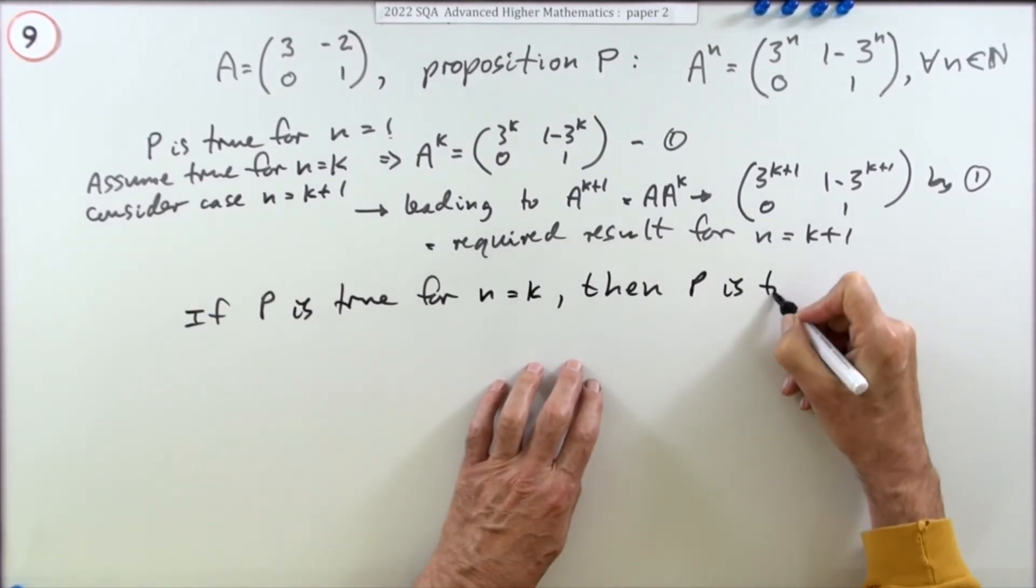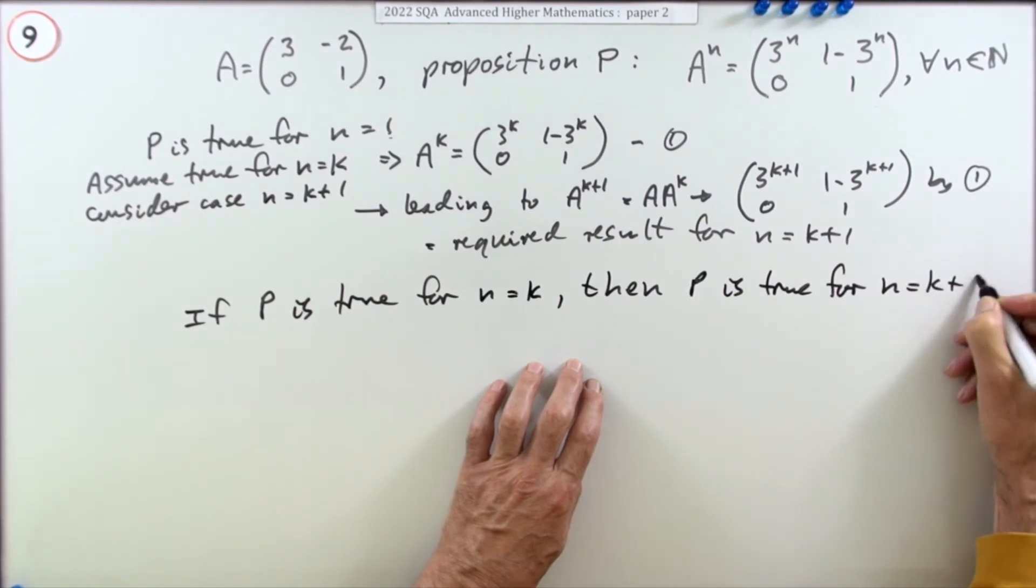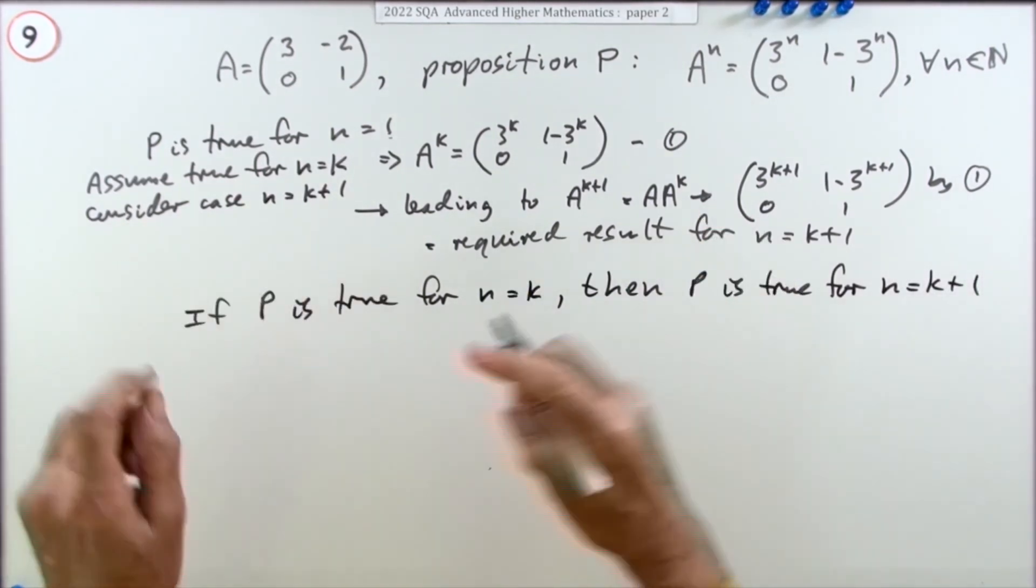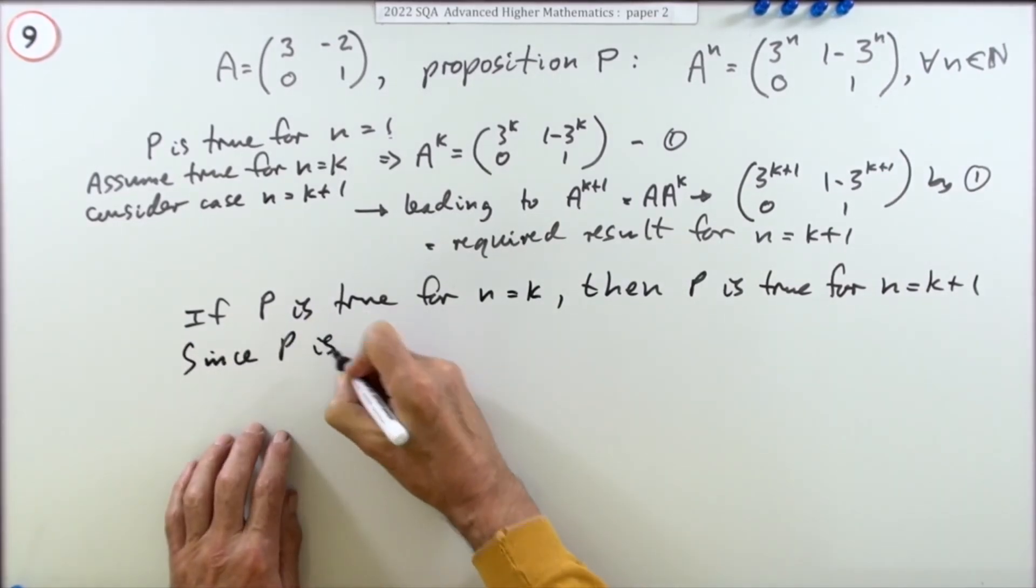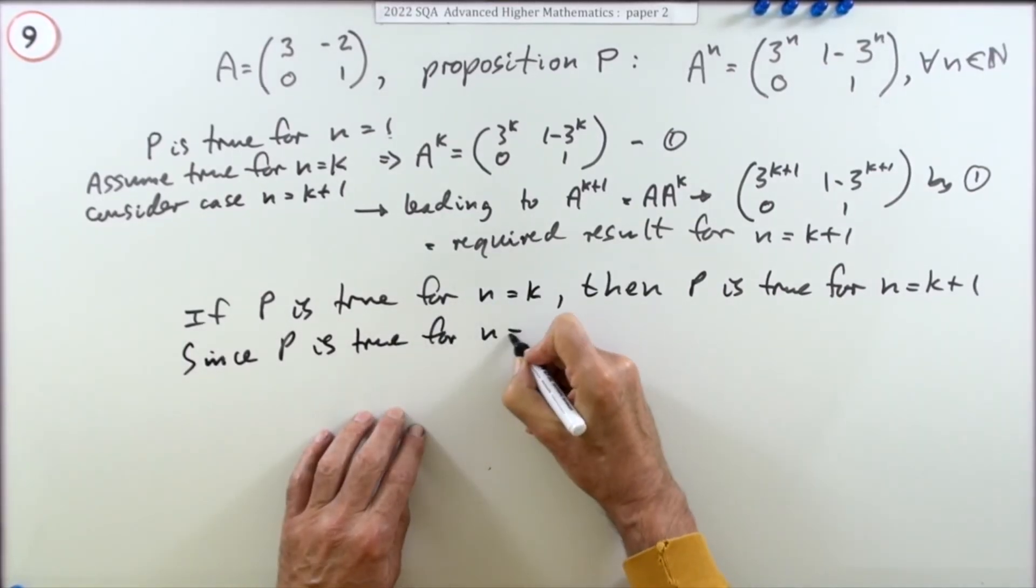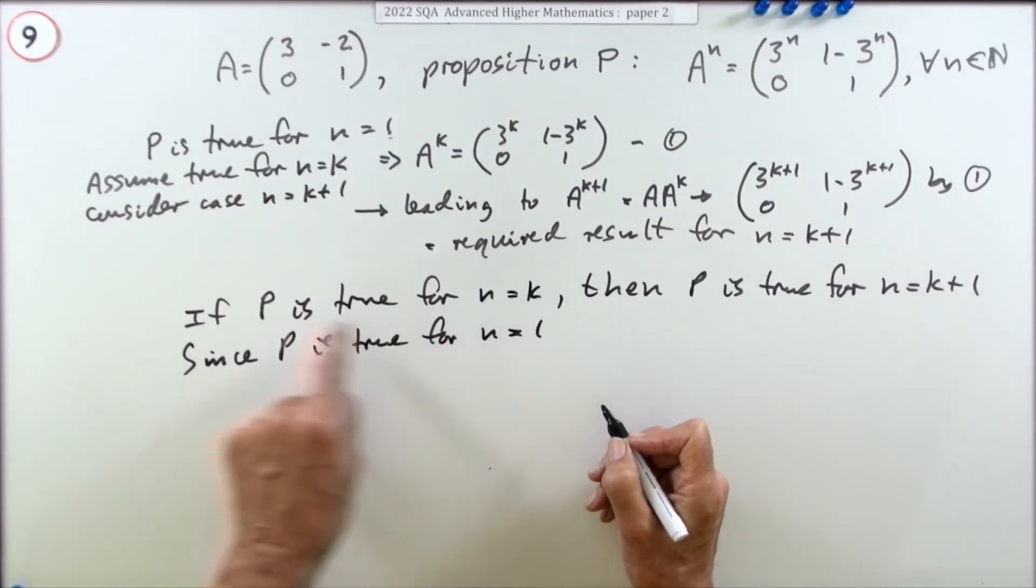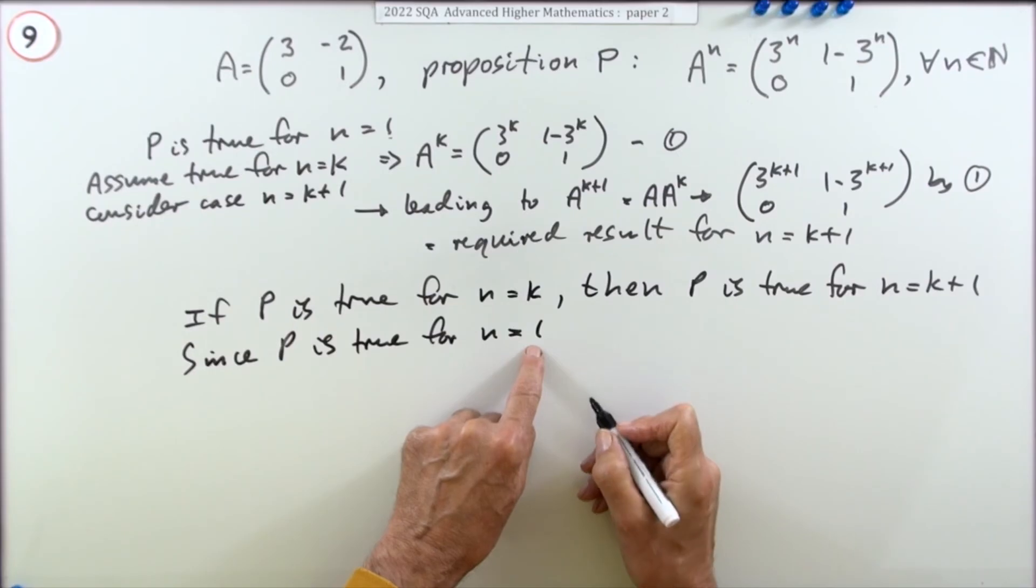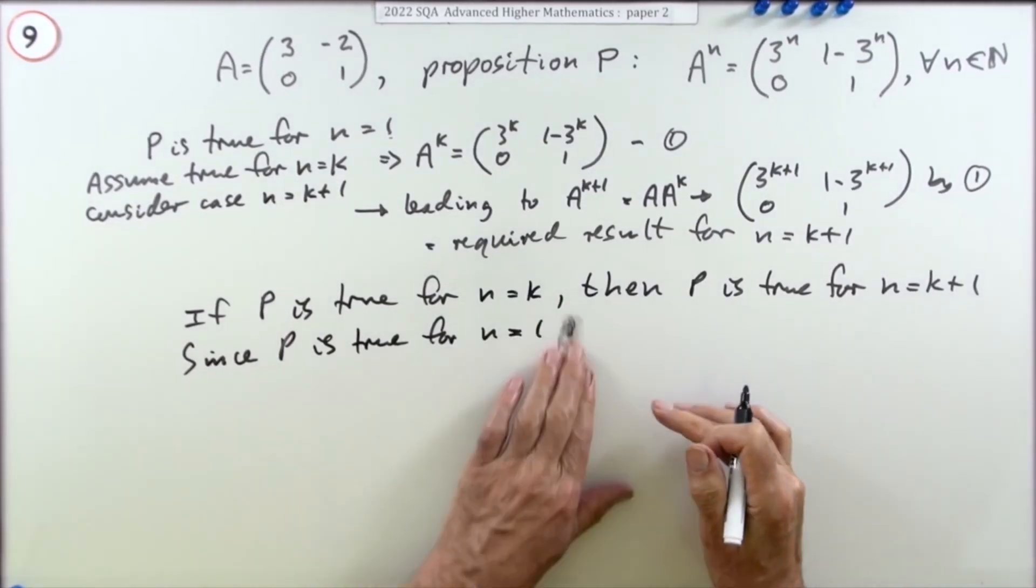So what you've got here is this: you've got if P is true for n equals k, then you have demonstrated that P is true for n equals k plus one, whatever k happens to be. But since P is true for n equals one, so that's a definite, that's not an if, that's a yes, it is true for n equals one.